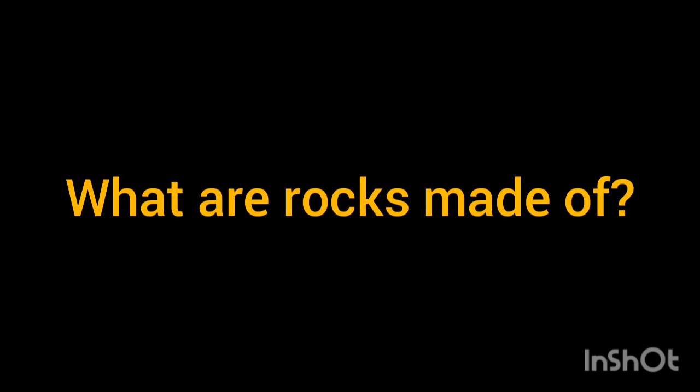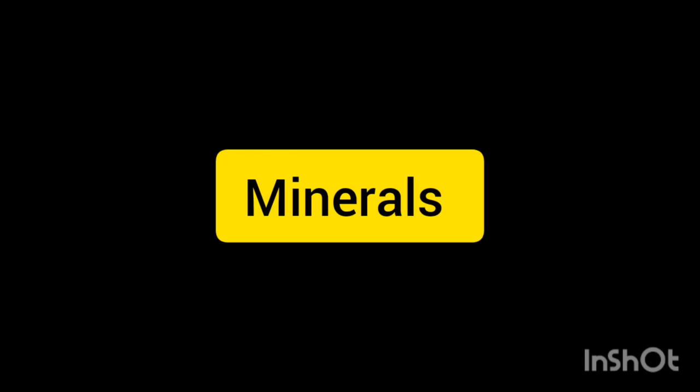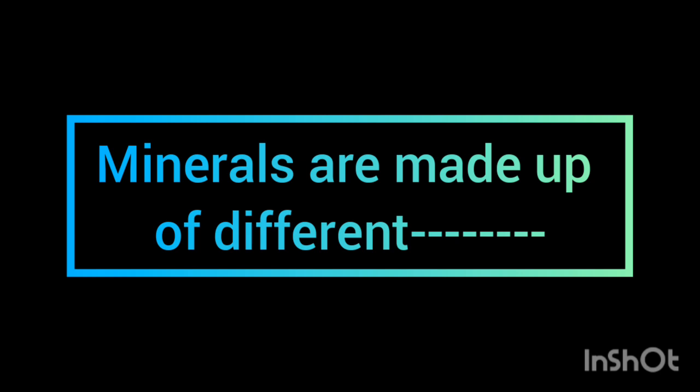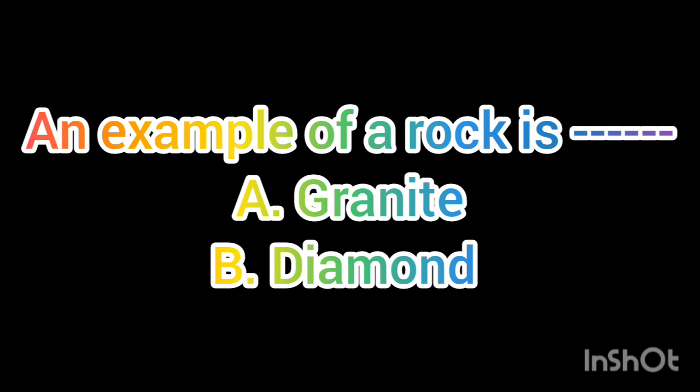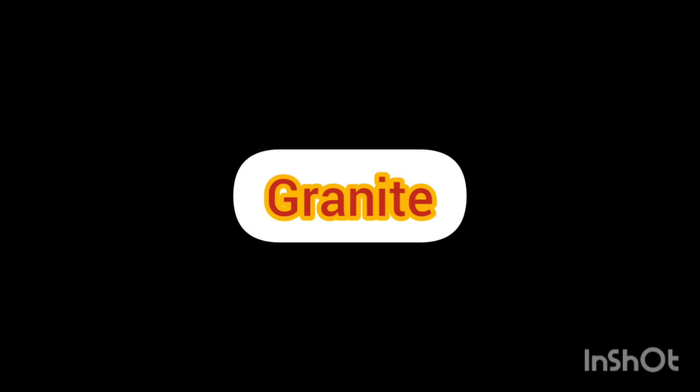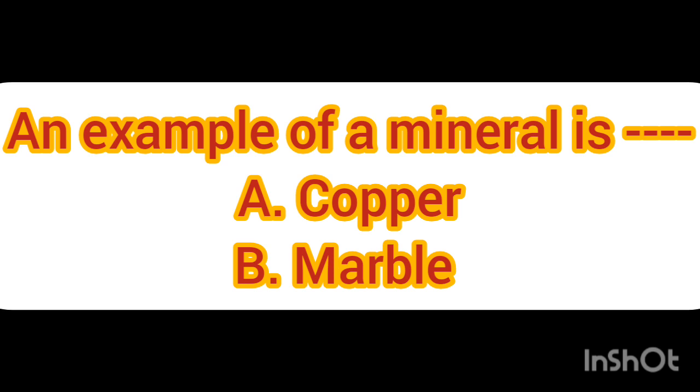This is like a 'Who Wants to Be a Millionaire' game. First question: What are rocks made of? The correct answer is minerals. Next question: Minerals are made up of different what? The correct answer is elements. Next: An example of a rock is — A) granite or B) diamond? It is granite; diamond is an example of a mineral. Last question: An example of a mineral is — A) copper or B) marble? The correct answer is copper.